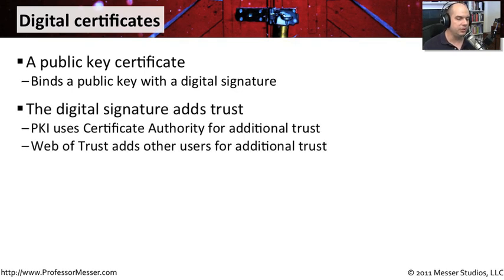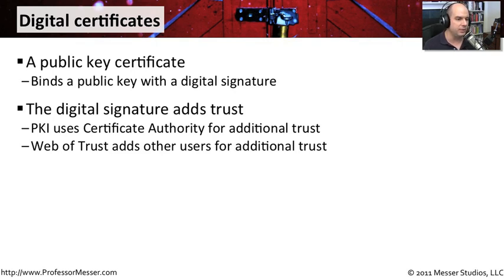A digital signature placed on a digital certificate adds some trust. In a public key infrastructure, a certificate authority signs the digital certificate, adding additional trust to it. If you're in an environment using something like PGP or OpenPGP, that uses something called a web of trust to make sure that everybody trusts everyone else.